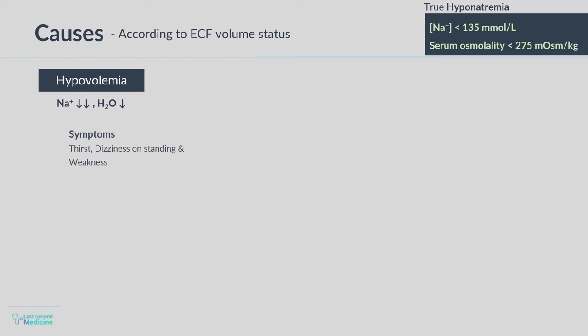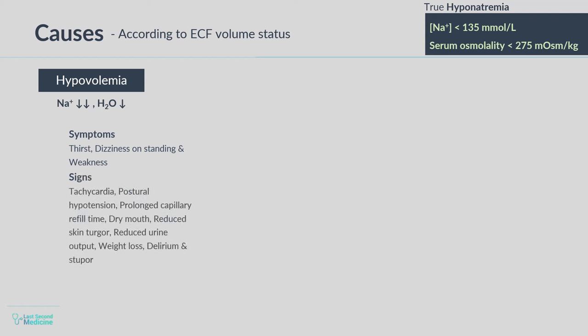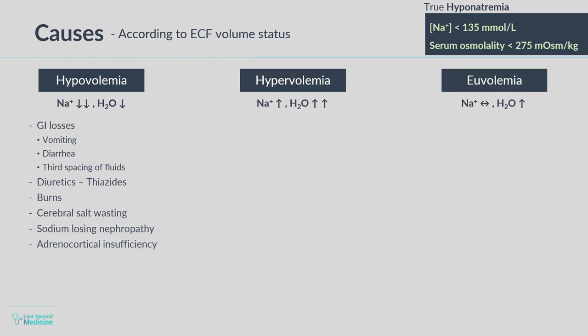Symptoms include thirst, dizziness on standing, and weakness. Signs may include tachycardia, postural hypotension, prolonged capillary refill time, dry mouth, reduced skin turgor, reduced urine output, weight loss, delirium, and stupor. Hypervolemic hyponatremia is seen in conditions leading to fluid overload including heart failure, liver cirrhosis, or nephrotic syndrome, and the cause is usually obvious from the history and clinical condition of the patient.